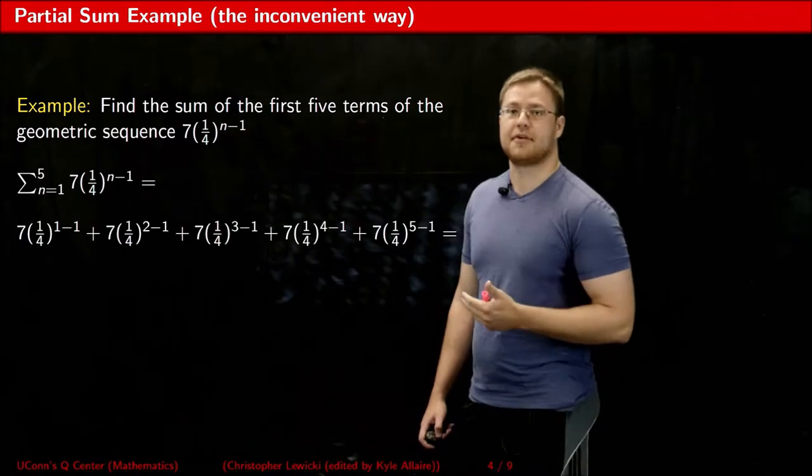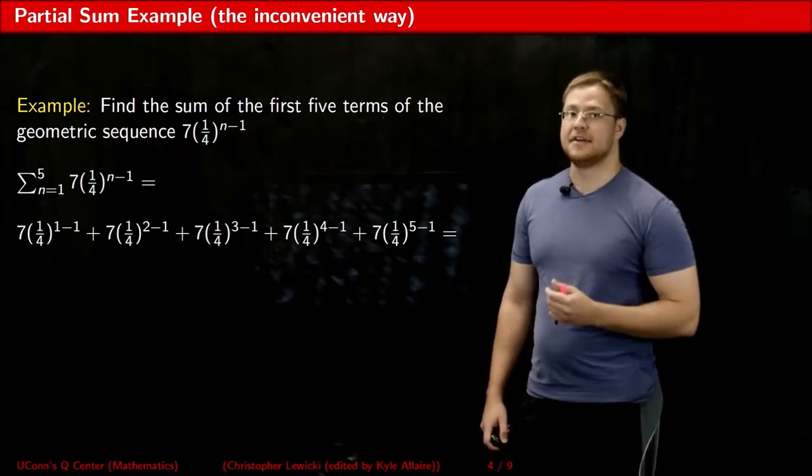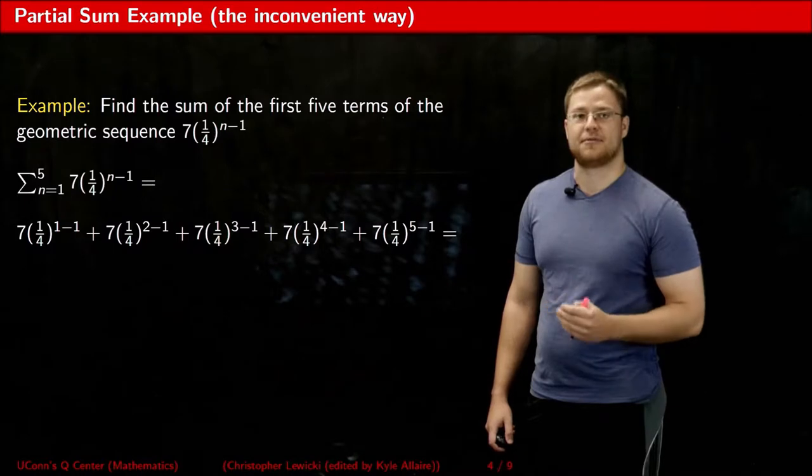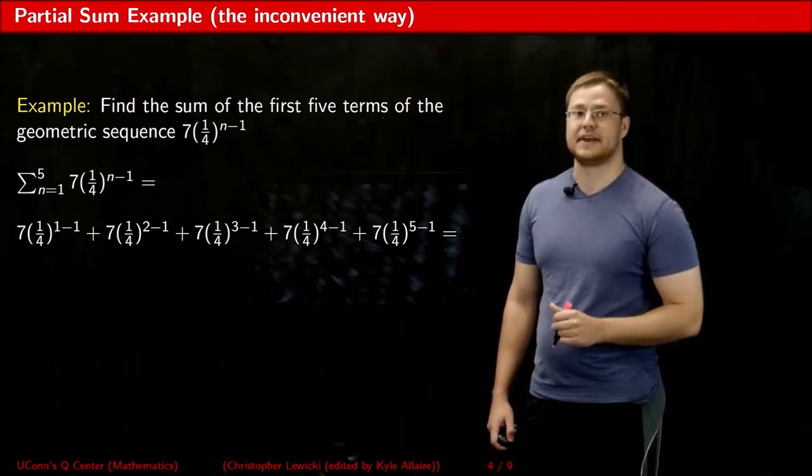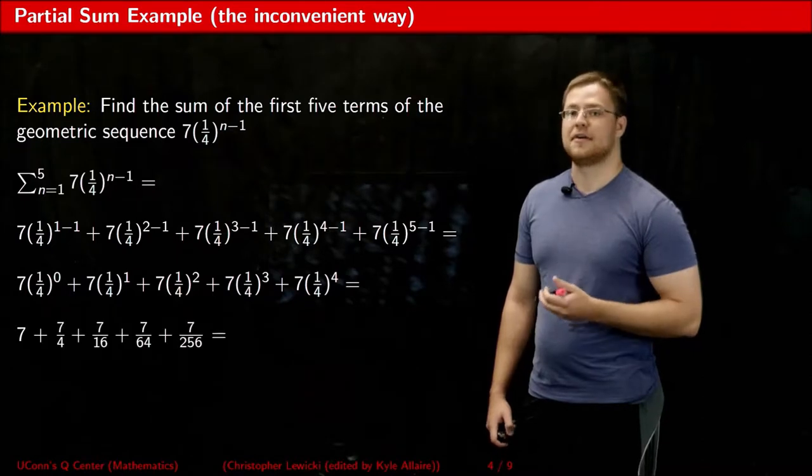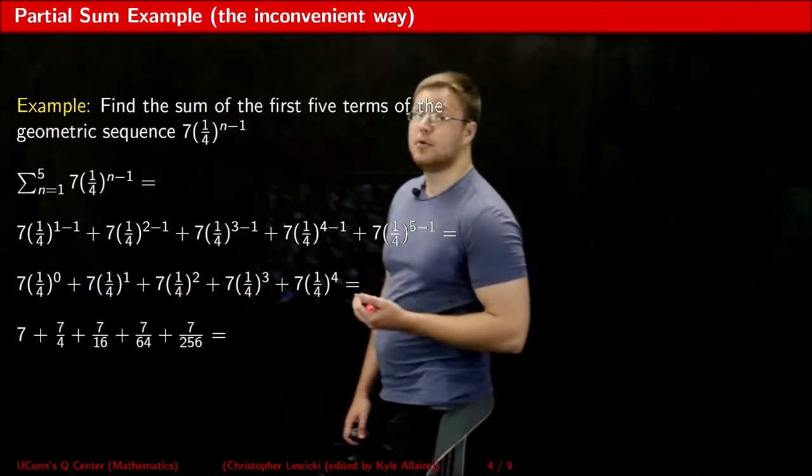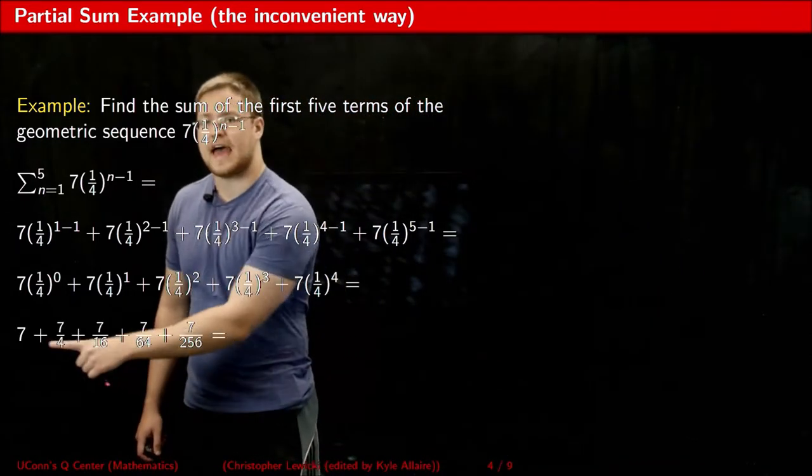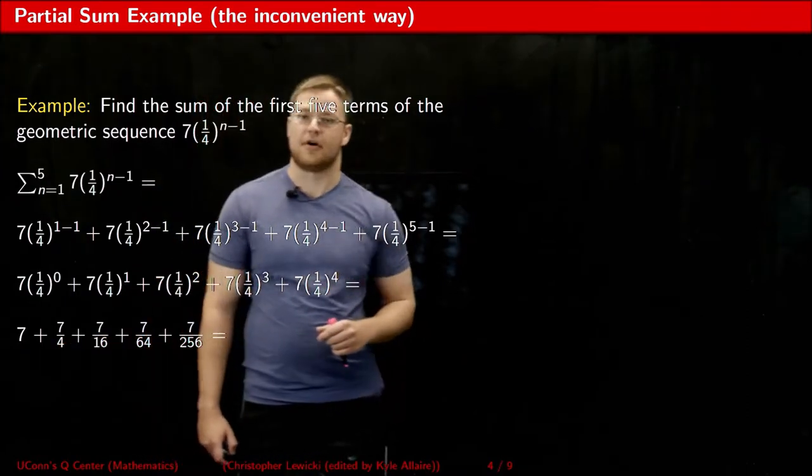Next, what this looks like is adding up all of these fractions together. And already I could tell that this method for finding the partial sum is really inconvenient. If I was to simplify the exponents and then distribute the exponents, what we now have to do is go through the hassle of finding a common denominator for all these fractions.